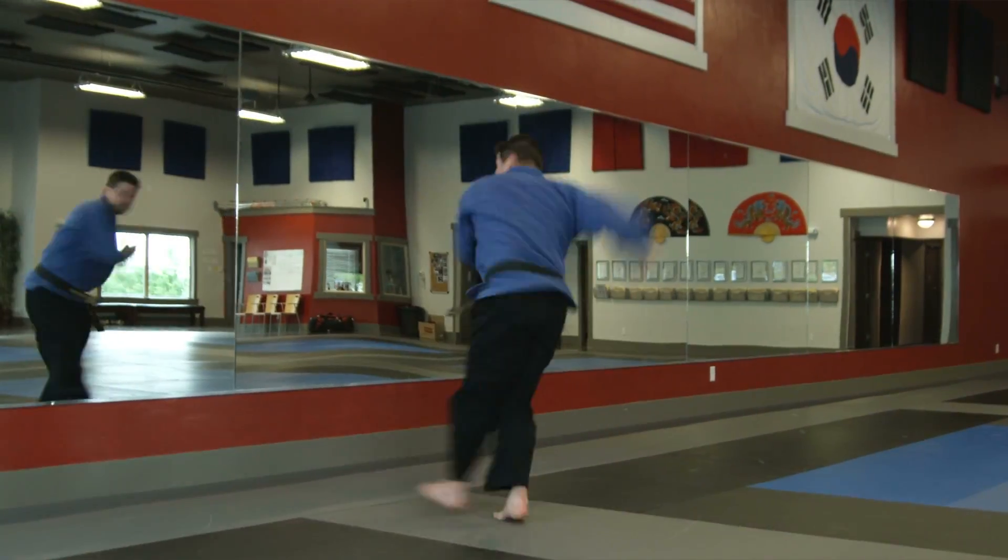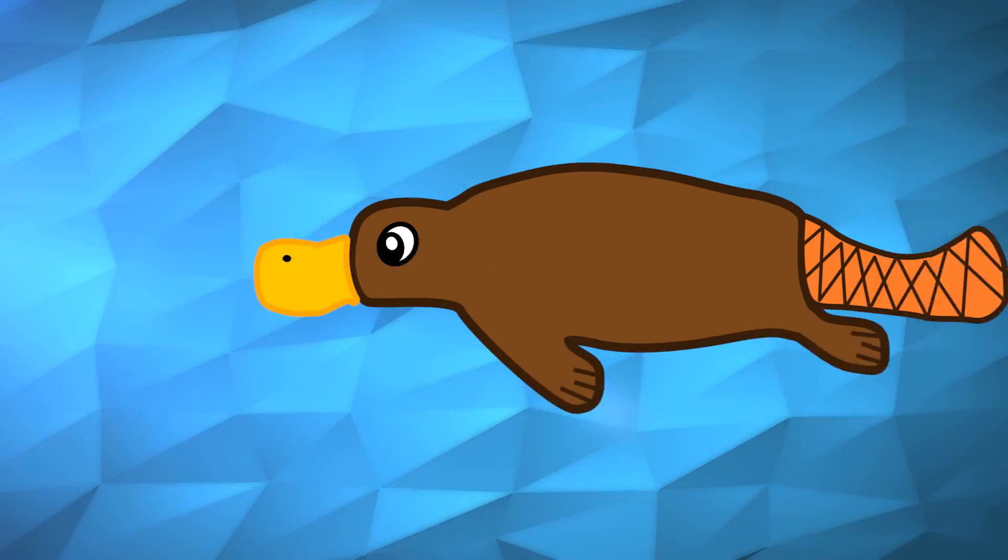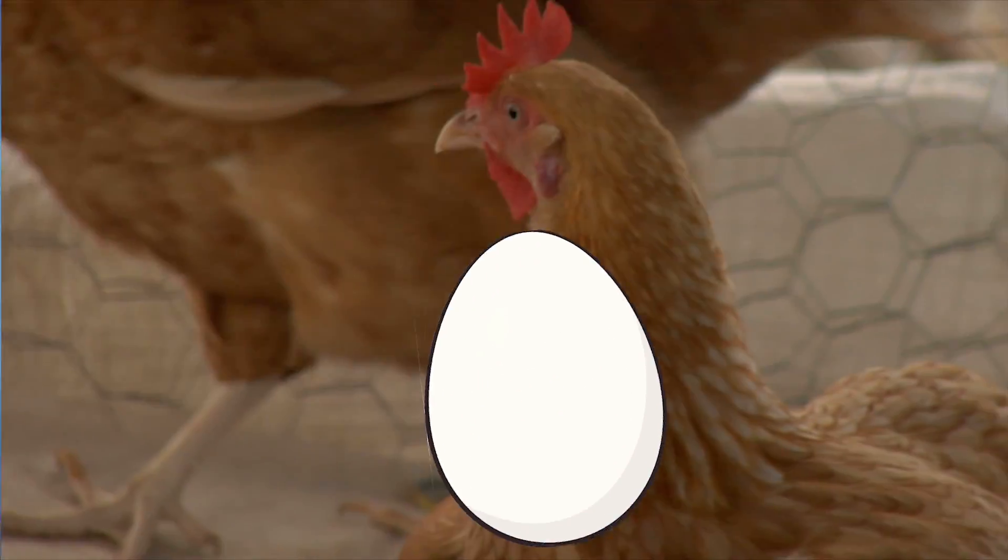This venomous spike is used for self-defense in the case of attack, but perhaps even weirder is that while platypuses are mammals, females lay eggs.